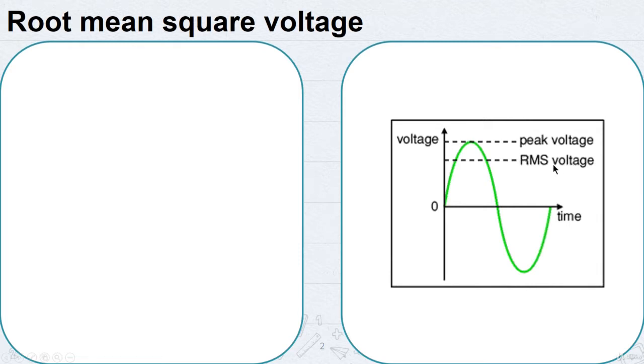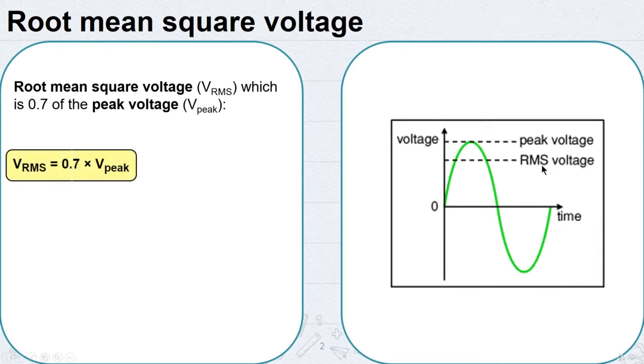The root mean square voltage is 0.7 of the peak voltage. So the RMS voltage is equal to 0.7 times the peak voltage, and the peak voltage is equal to 1.4 times the RMS voltage.